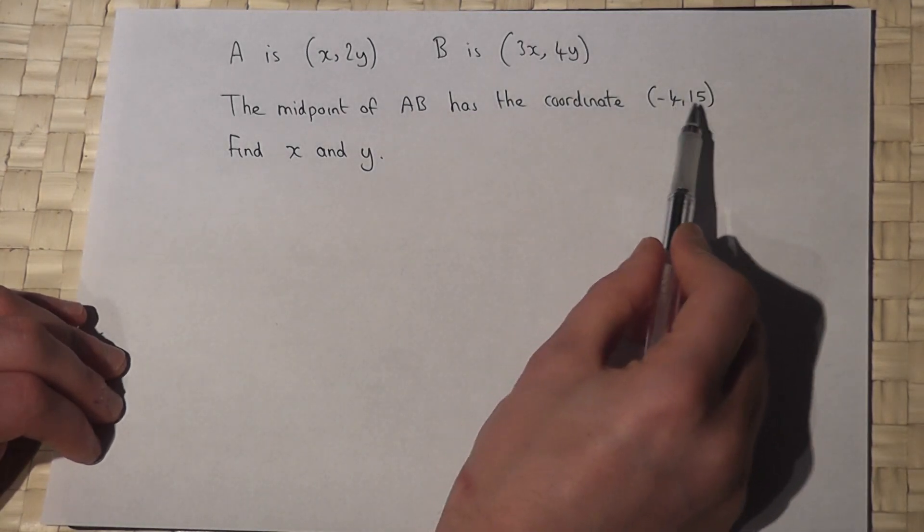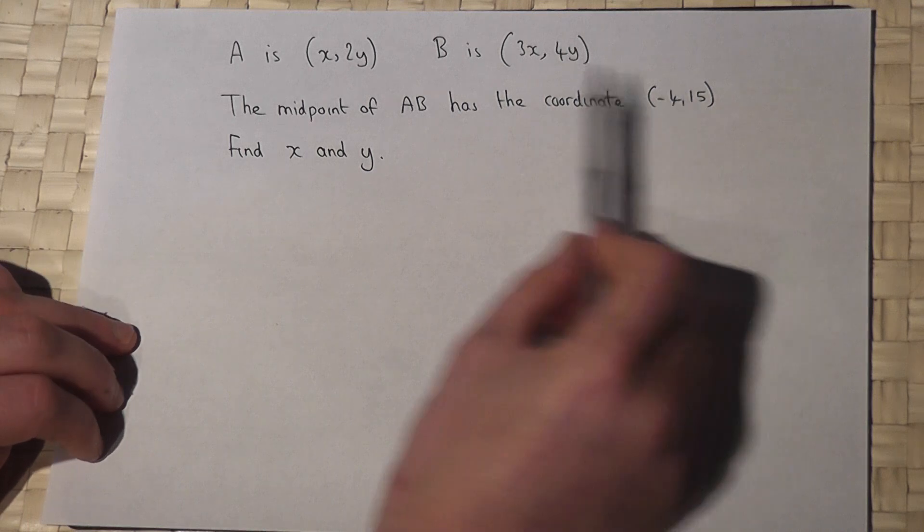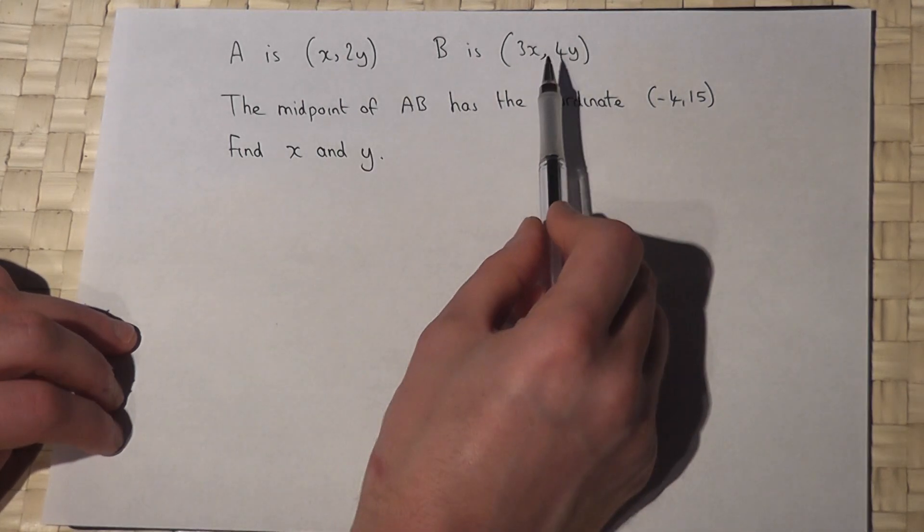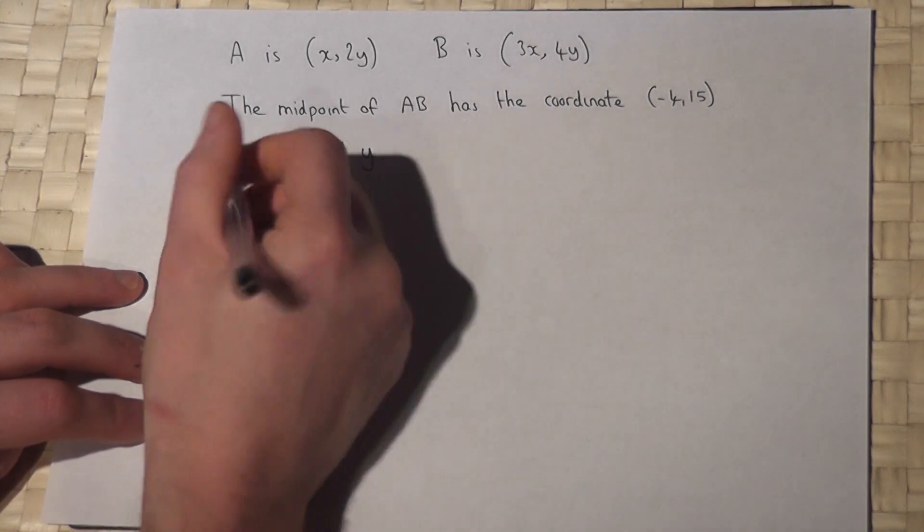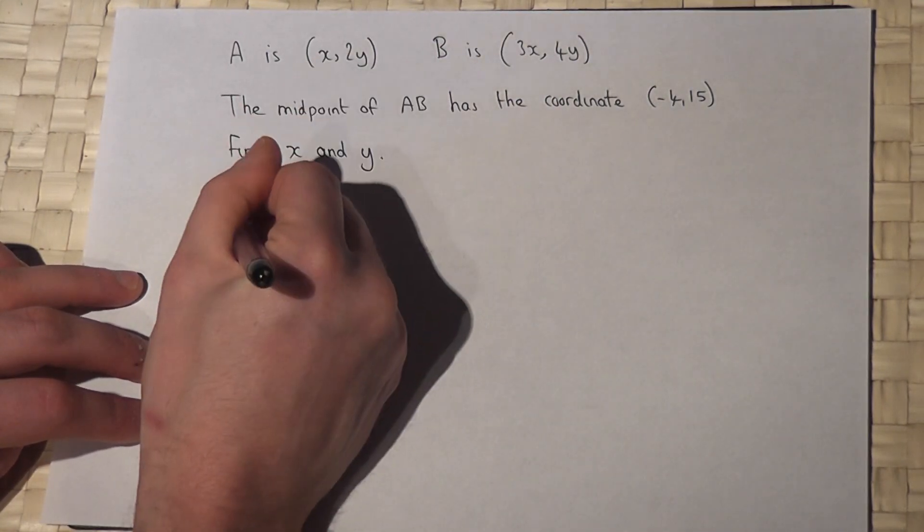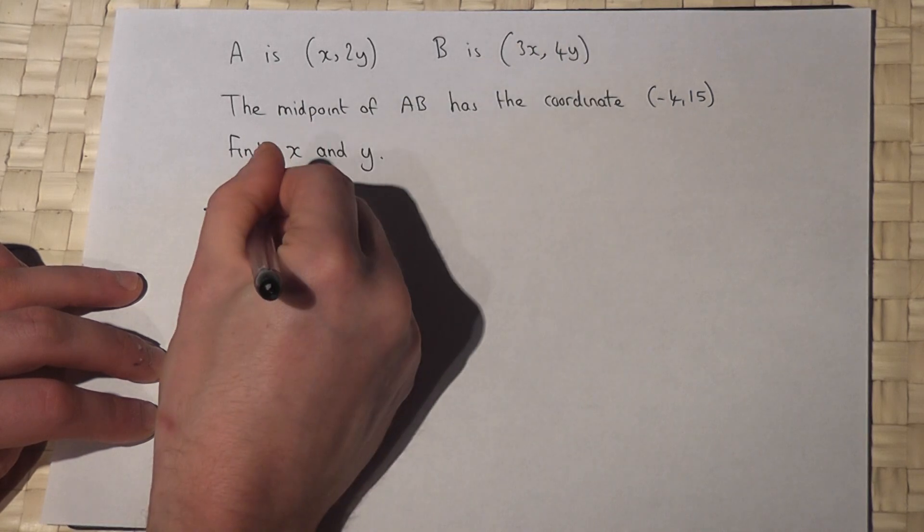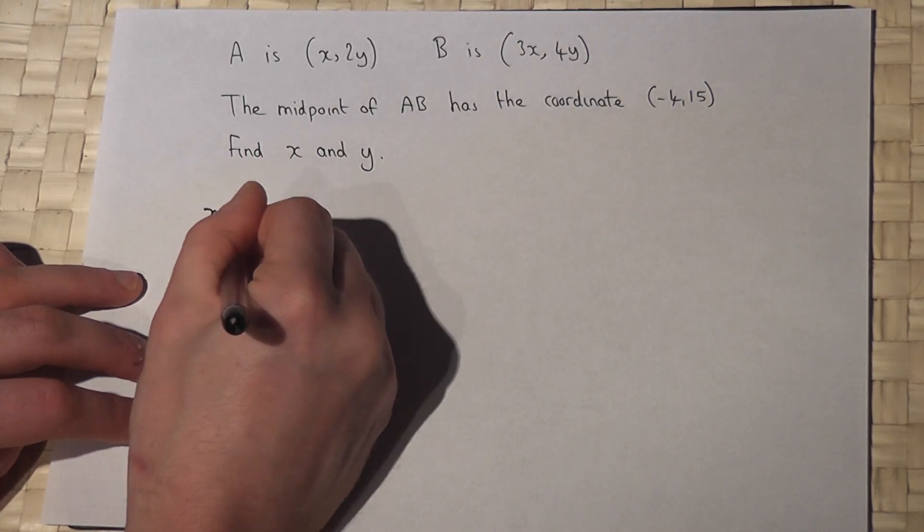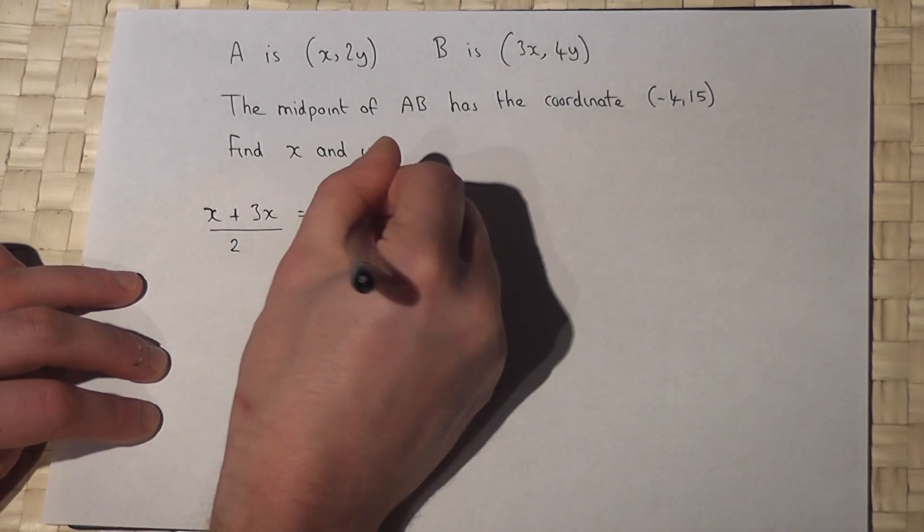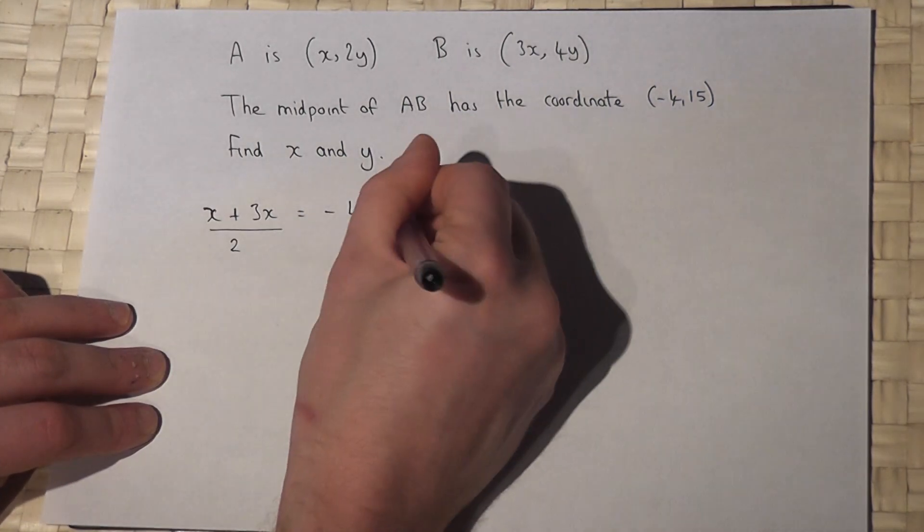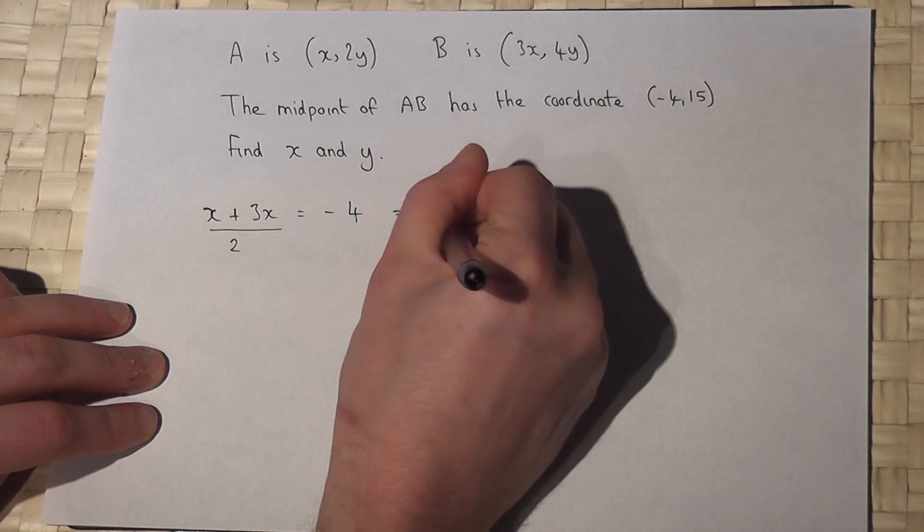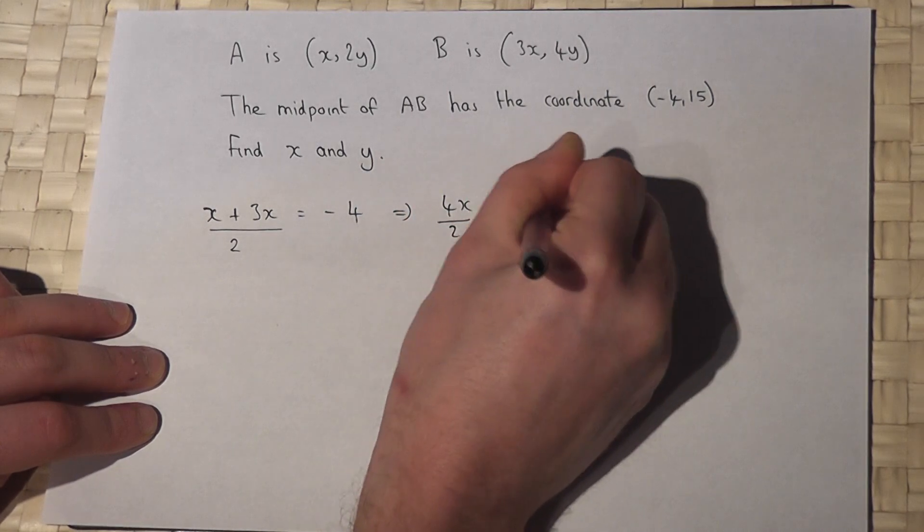The midpoint coordinate is the average of these two coordinates. So if I look at the x-coordinates, then what this means is that x-coordinate plus that x-coordinate divided by 2 must equal minus 4. So x plus 3x is 4x over 2 equals minus 4.